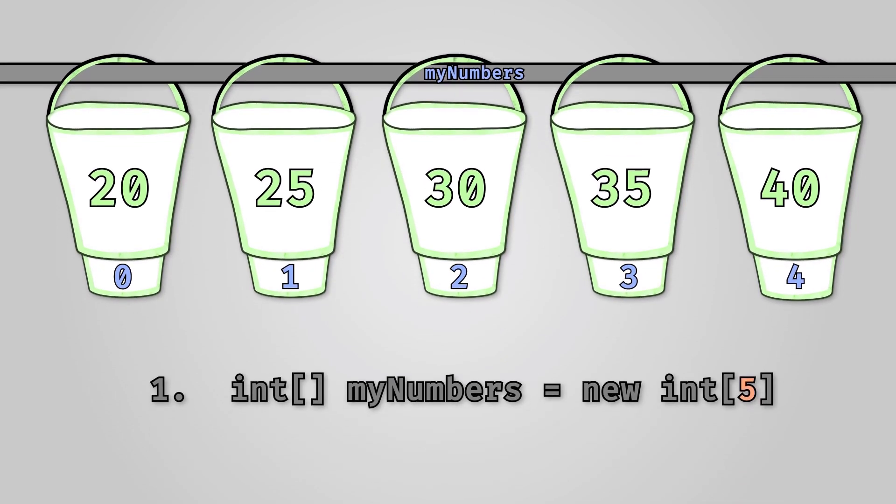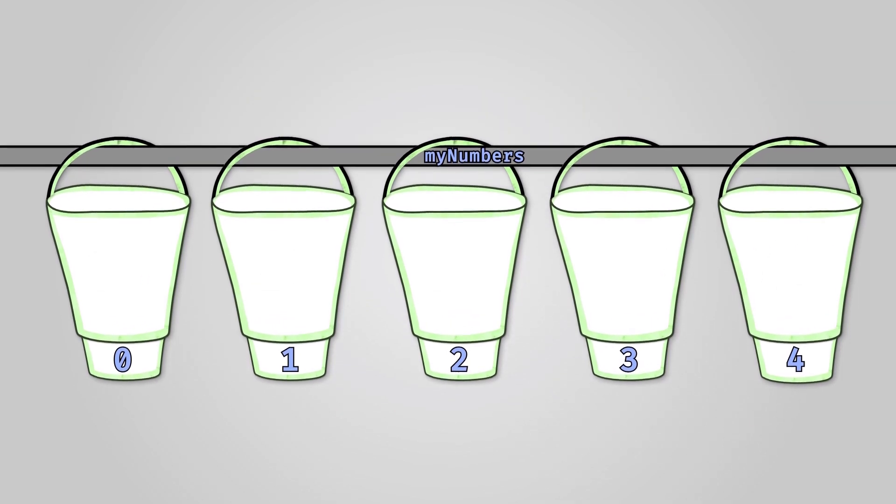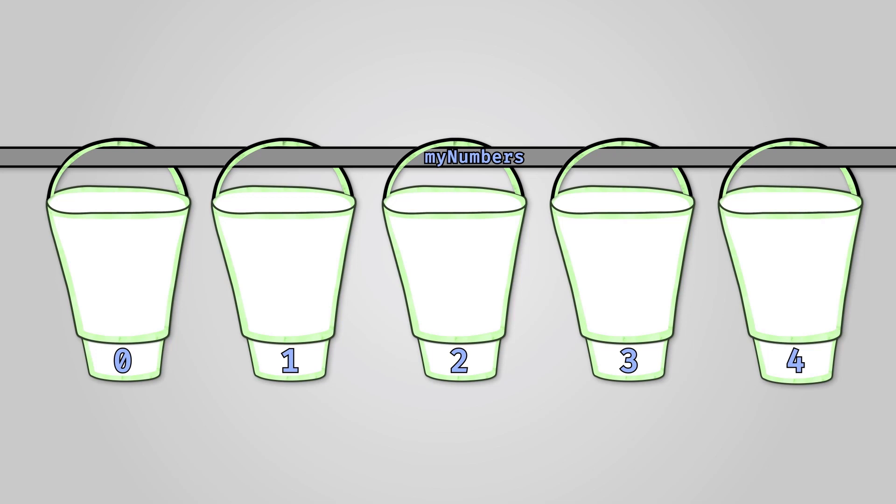For example, if we wanted to declare an array using the programming language C sharp, then we would write the following. This line identifies that we are creating an array of integers. It then gives the array an identifier of myNumbers and tells the computer we want five elements in our array. This is like getting a pole, writing a name on it, and then hanging five buckets on the pole. In this case we say that the array has been declared and initialized. In other words, the array has been created but no values have been assigned.